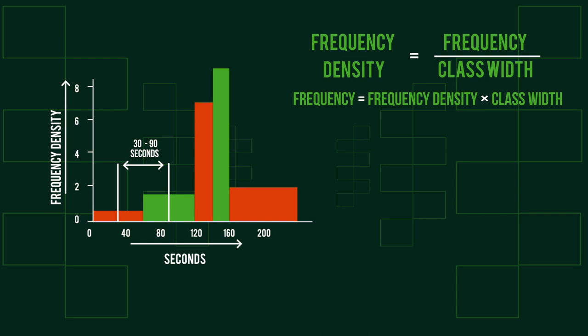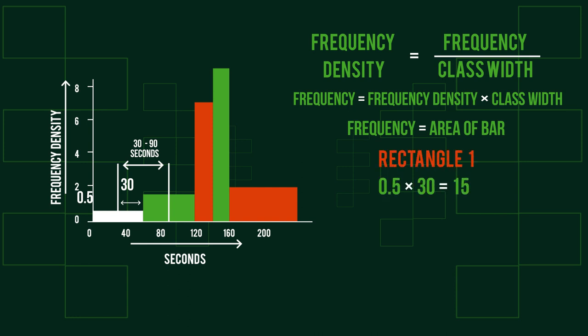If we look at our histogram, we plot frequency density against class width, so the area of each bar is the same as its frequency. Rectangle 1 has a height of 0.5 and a width of 30, because the bar's width is 30 seconds to 60 seconds. Multiplying these tells us there are 15 people in rectangle 1 between 30 and 60 seconds.